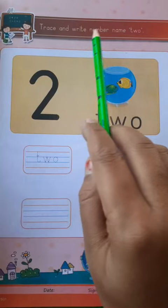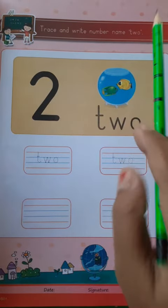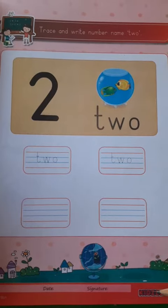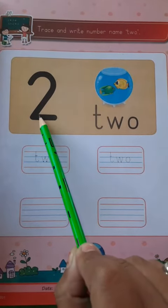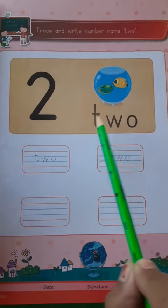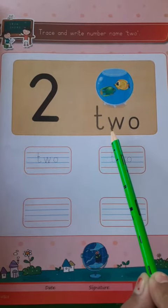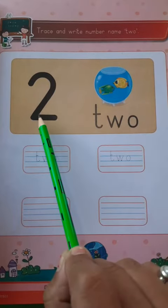Trace and write number name two. Look at the worksheet. This is number two. This is number name two: T-W-O, two.